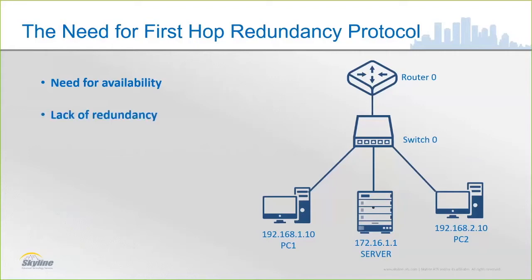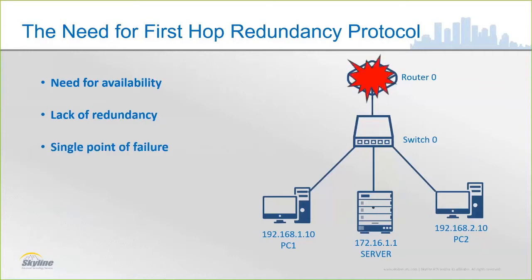The design you see there does not have redundancy, so that would be a poor design. What we're going to want to do is design with a redundant default gateway. One of the things that these first-hop redundancy protocols are going to do is help us design in redundancy so that we don't have that single point of failure completely debilitating anybody from getting to or from the server, or from disseminating content to our vital clientele.